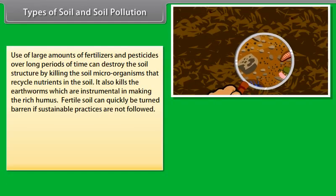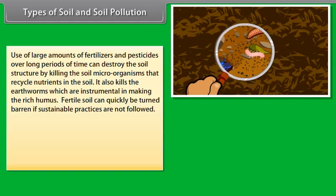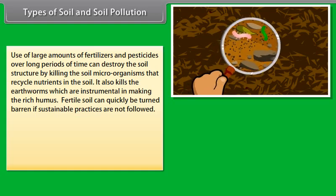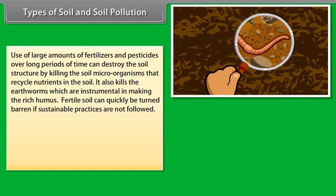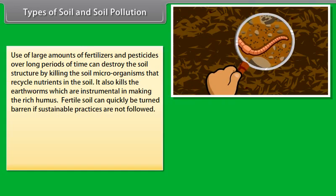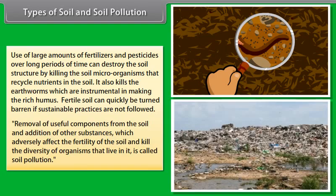Use of large amounts of fertilizers and pesticides over long periods of time can destroy the soil structure by killing the soil microorganisms that recycle nutrients in the soil. It also kills the earthworms which are instrumental in making the rich humus. Fertile soil can quickly be turned barren if sustainable practices are not followed. Removal of useful components from the soil and addition of other substances which adversely affect the fertility of the soil and kill the diversity of organisms that live in it is called soil pollution.